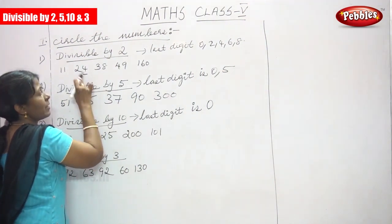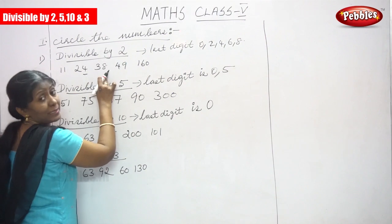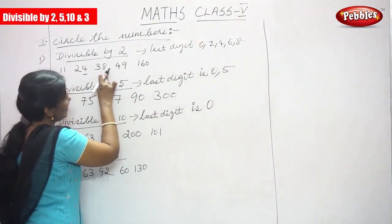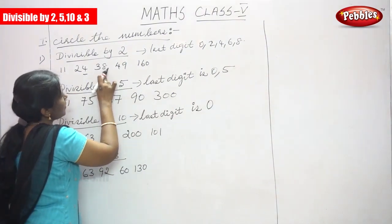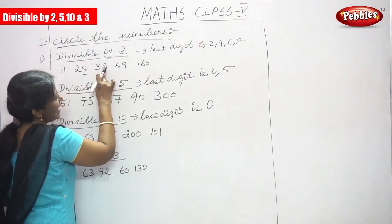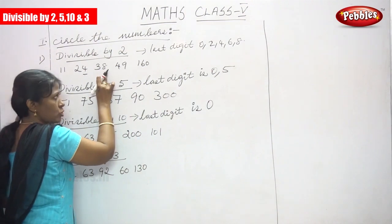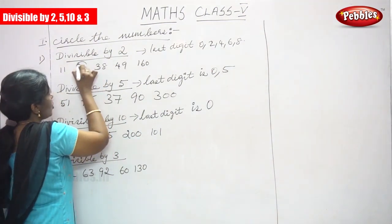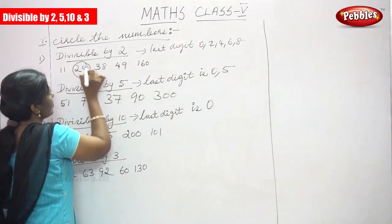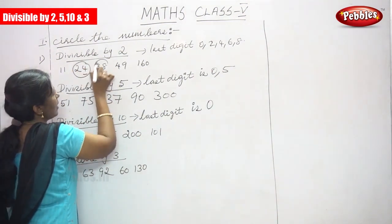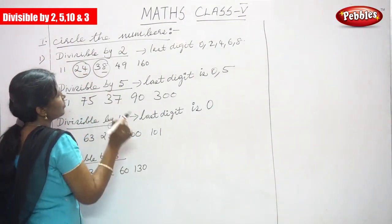38: the last digit ends with 8, so it is divisible by 2. So I circle the number.